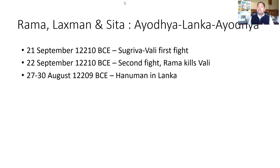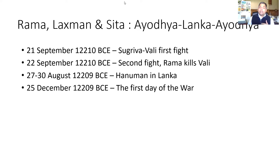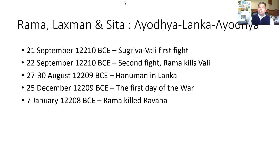When Hanuman was in Lanka, he returned to Kishkinda, and then the Vanara army left from Kishkinda to Lanka. Nala built the Nala Setu, and the Vanara army crossed using it to Lanka. The war began on 25th of December 12,209 BCE, lasted for about 13 days, and on 7th of January 12,208 BCE, Rama killed Ravana.